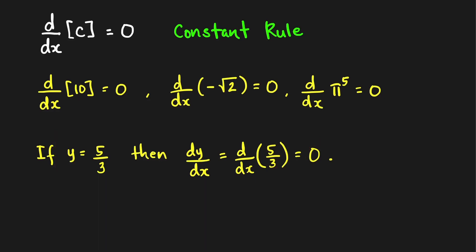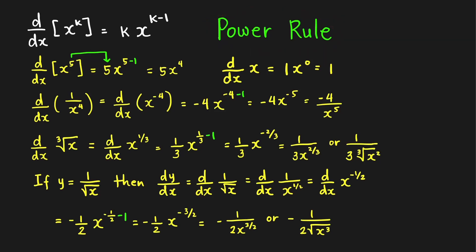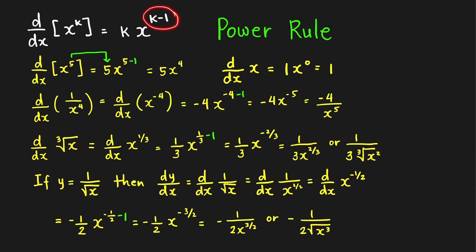Next, we have the power rule. The power rule tells us that the derivative of the power function x raised to k, where k is any real number with respect to x, is equal to: bring down the power of x, and subtract 1 from the power of x. So the new power is now equal to k minus 1 — you reduce the power by 1.